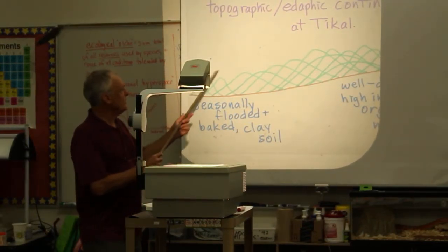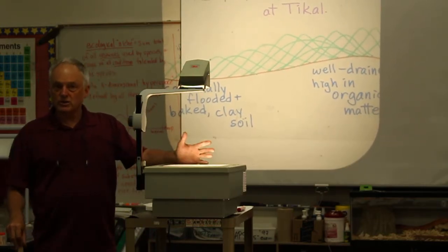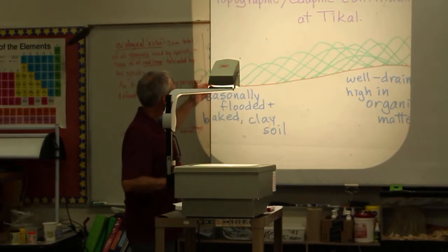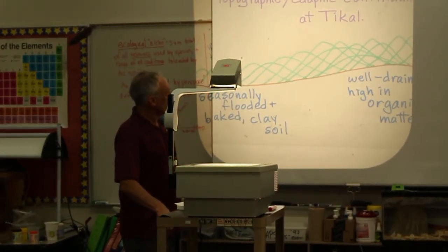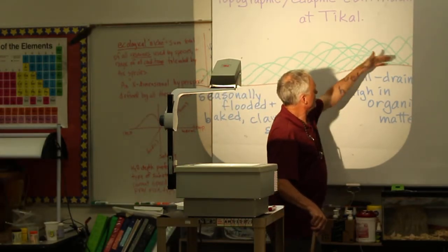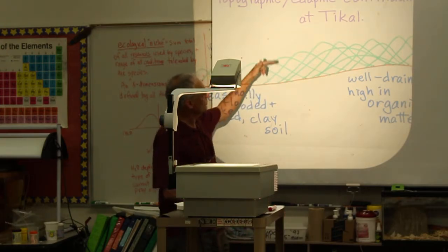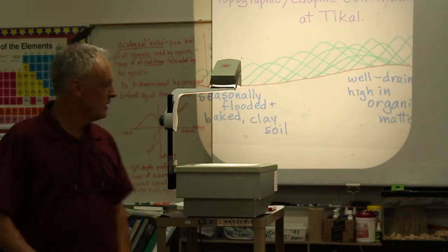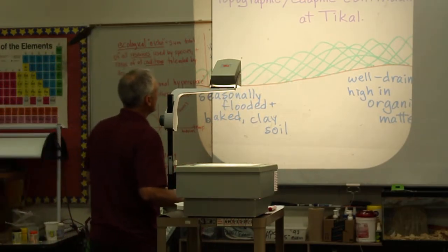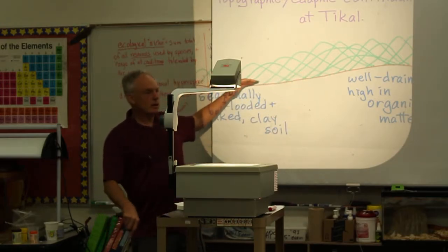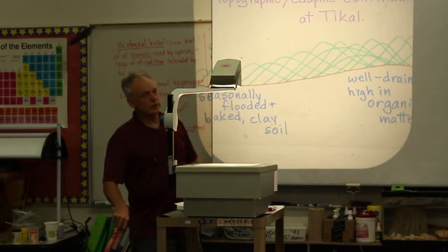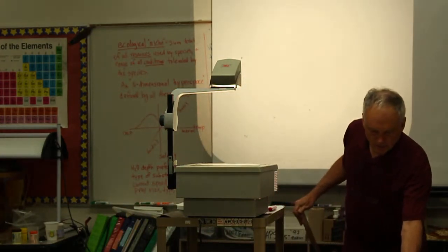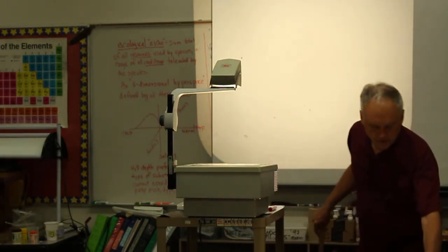Clay holds on to water really tightly, so plants have a lot of trouble getting water from clay. In the rainy season they're practically drowning, and in the dry season it's like they live in a desert — a very extreme environment. These species occurrence curves show a constant turnover of tree species along this composite environmental gradient of soil type and soil moisture, with more than a hundred species each reaching their highest density at different points.